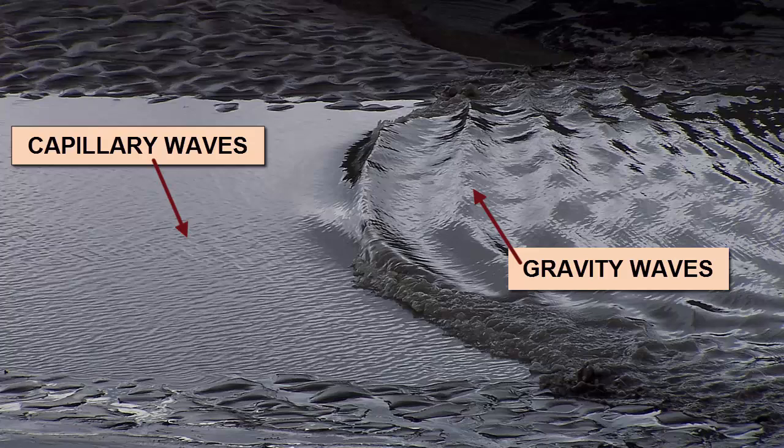As you can see in this image, if we let wind be our generating force, the main visual difference between the two is their size. The barest breeze will create small capillary waves, and as the wind increases in its intensity, it will turn into a gravity wave that can get bigger and bigger depending on the force of the wind.